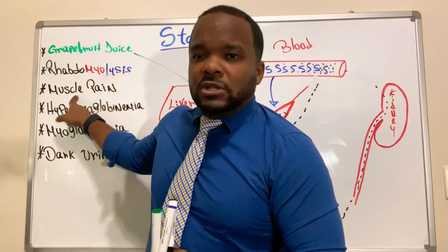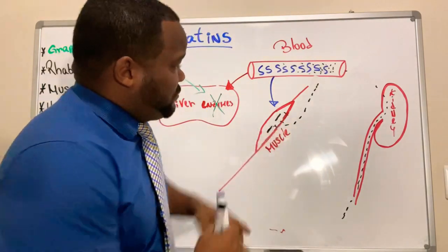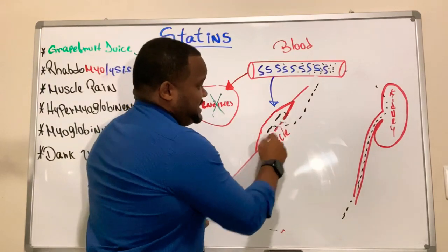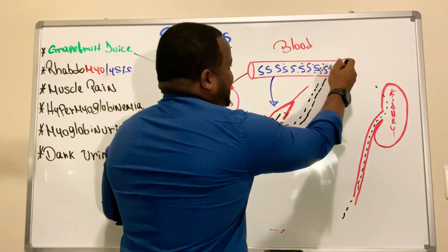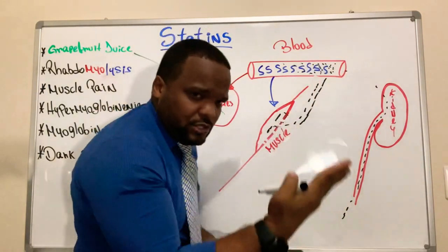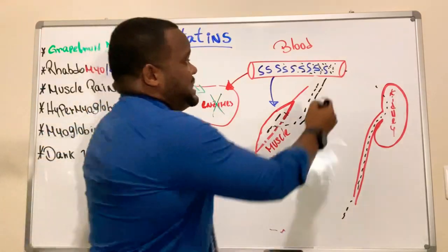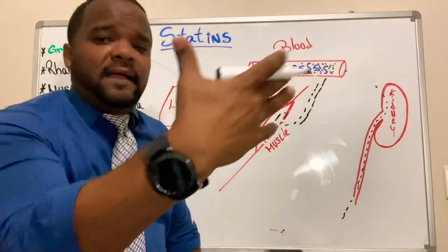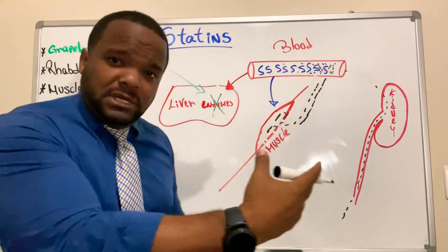Because of the destruction of the muscles, the patient feels muscular pain. At the same time, we're going to have too much myoglobin leaking into the bloodstream. If you destroy the fiber, the protein leaks out, giving us hypermyoglobinemia — an excess of myoglobin in the blood.